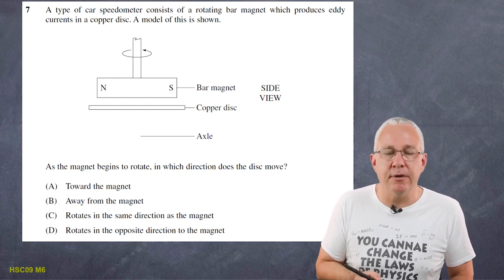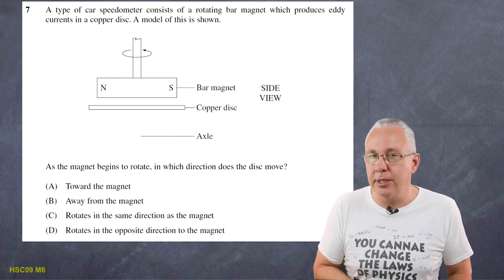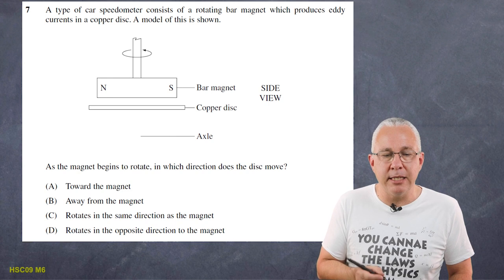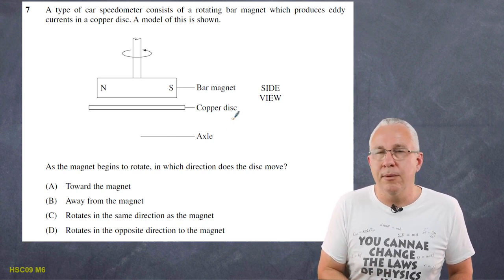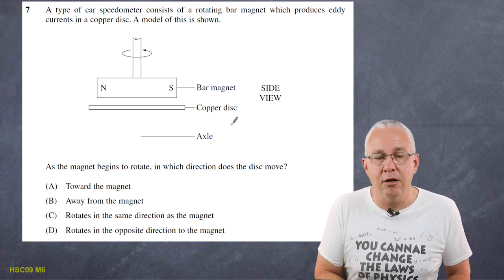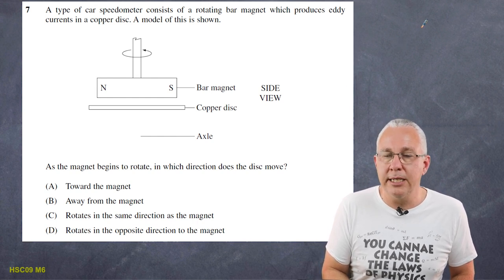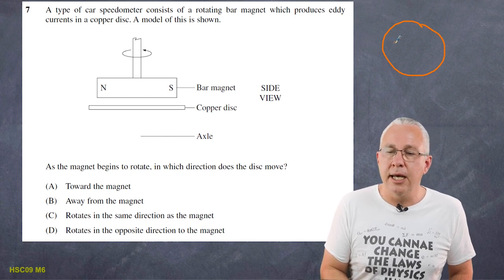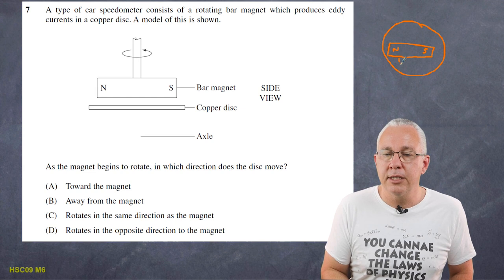Question 7: a type of car speedometer consists of a rotating bar magnet which produces eddy currents in a copper disk. As the magnet begins to rotate, in which direction does the disk move? This is a situation of Lenz's law. Looking from the top perspective, I have my disk, and my magnet is spinning — north on one side, south on the other — turning in a given direction.